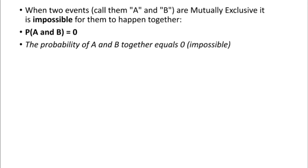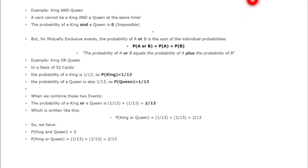When two events A and B are mutually exclusive, it is impossible for them to happen together. Either A can happen or B can happen. If you want both A and B to happen together, it is impossible — the probability of A and B together equals zero. For example, turning left or right: both can't happen together, so the probability is zero.